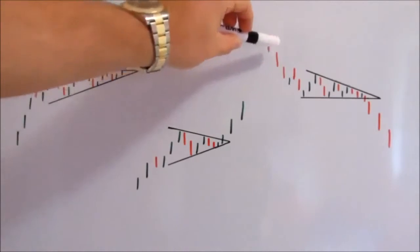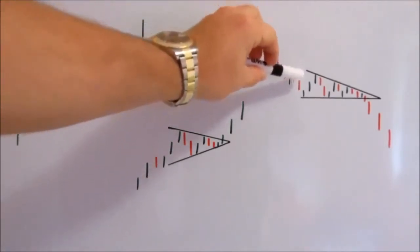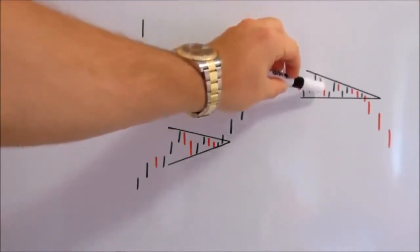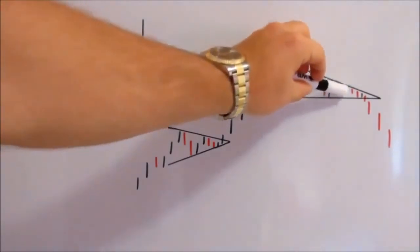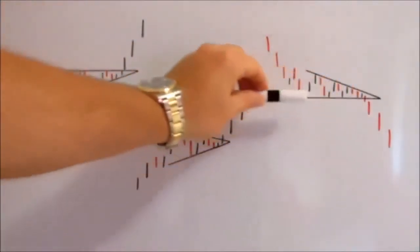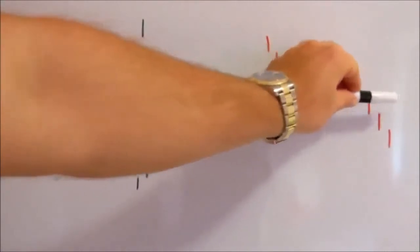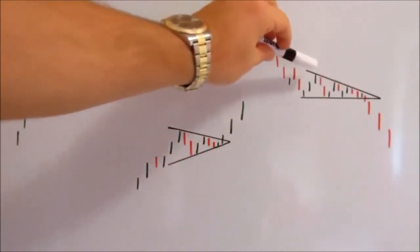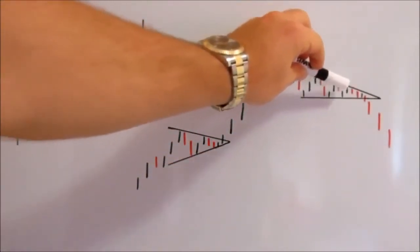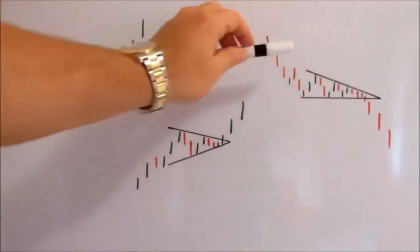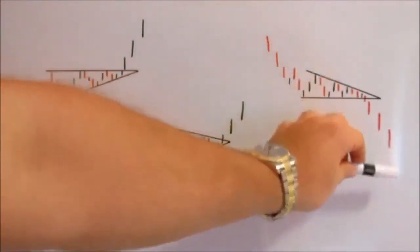Triangle 2 is found in downtrends and continues the price lower. What you'll find with this pattern is the highs do get lower as the pattern continues to form and you will get a horizontal buy line as the support of this pattern. The sell line is descending and what you would expect is a break on the downside.